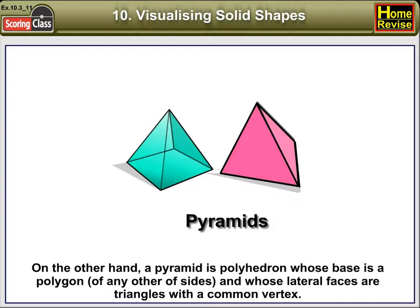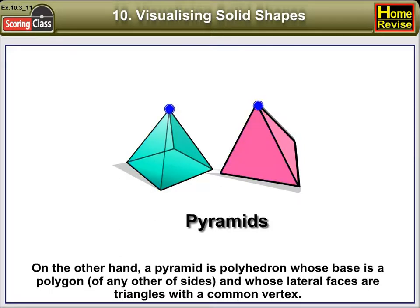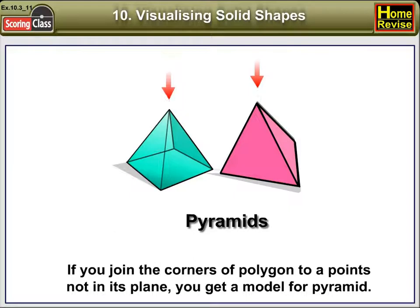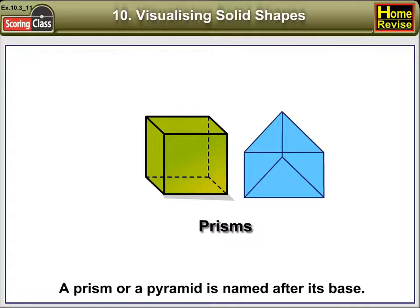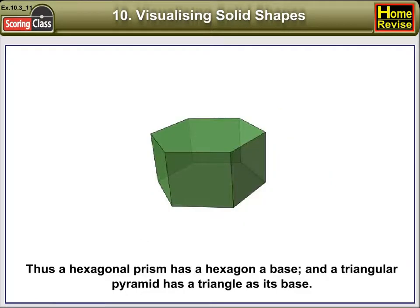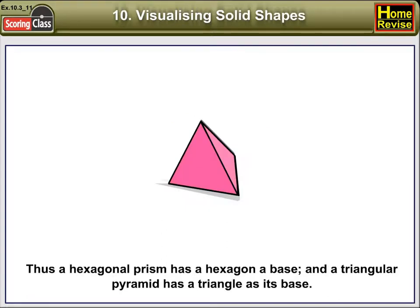On the other hand, a pyramid is a polyhedron whose base is a polygon of any number of sides and whose lateral faces are triangles with a common vertex. If you join the corners of the polygon to a point not in its plane, you get a model for a pyramid. A prism or a pyramid is named after its base. Thus, a hexagonal prism has a hexagon as its base, and a triangular pyramid has a triangle as its base.